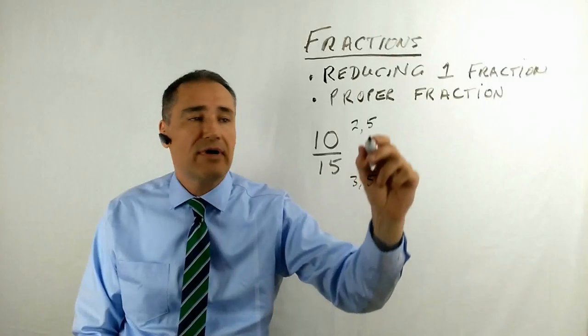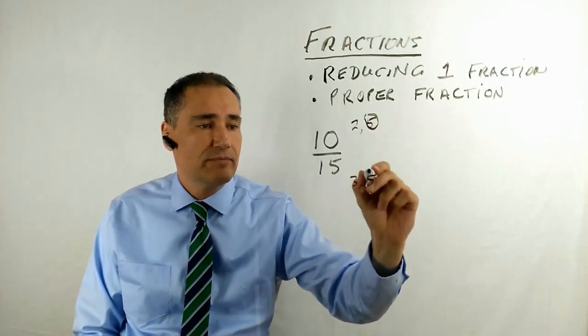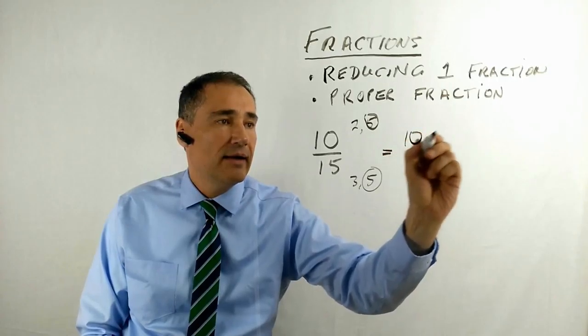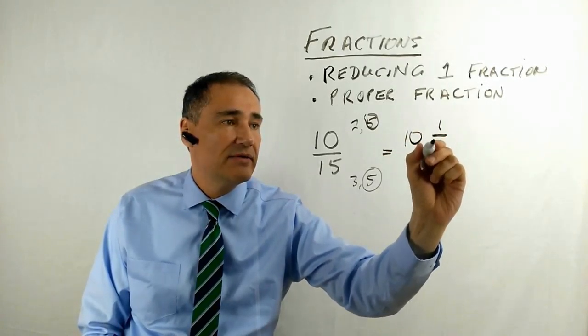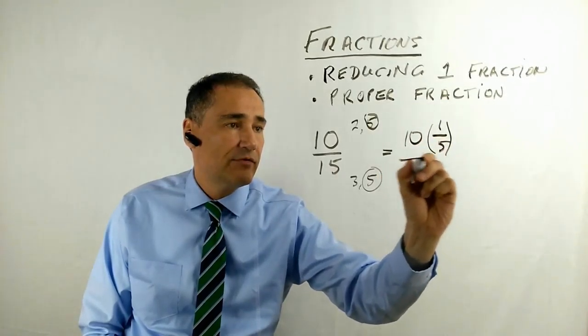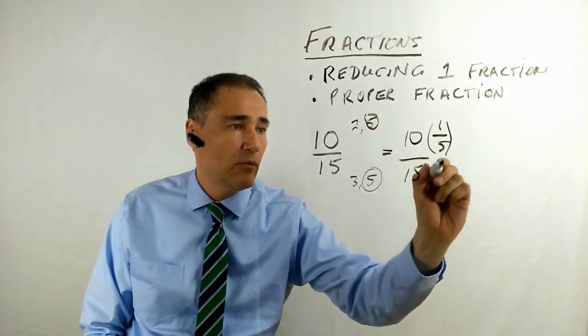So to reduce this fraction, we're going to pick the largest factor for each, and we are going to multiply by the inverse of them. Divide them by 15, 1 over 5.